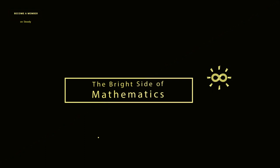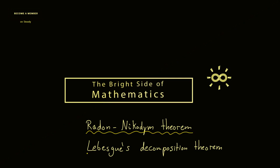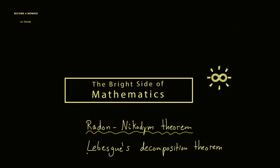Today's topic is about two important theorems in measure theory. Namely the Radon-Nikodym theorem and Lebesgue's decomposition theorem. Both you find in measure theory but also in a lot of applications. For this reason I want to give you here a short summary of them. Both theorems you can formulate in a very general sense by just using a measure space as we know it.